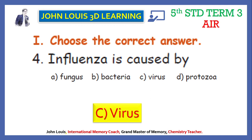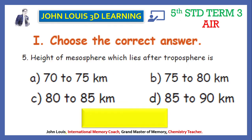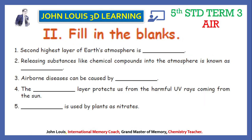Last question of this type: the height of the mesosphere which lies after troposphere is — A: 70 to 75 kilometers, B: 75 to 80 kilometers, C: 80 to 85 kilometers, D: 85 to 90 kilometers. We have already learned that five spheres are there in the atmosphere. The answer is B — 75 to 80 kilometers.